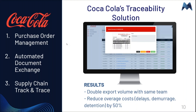The solution implemented was a traceability solution. We pulled in data from SAP directly from the purchase order. No matter which bottler was sending in information, we had automated document exchange — documents are created automatically, including logistical documents, bills of lading, and customs documents. We have the full supply chain track and trace, with all documents accounted for, responsible parties submitting data as needed, and physical asset data. The results were amazing: they were able to double their export volume with the same team and reduce their coverage costs by 50%.